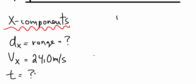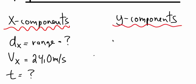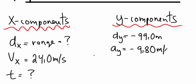So we have two things we don't know, which means we have to write our Y components. So, the distance in the Y direction, which is the height of the cliff, is negative 99 meters, negative because it's down. Acceleration in the Y direction is negative 9.80 meters per second squared. And our velocity in the Y direction is zero. And again we don't know our time.